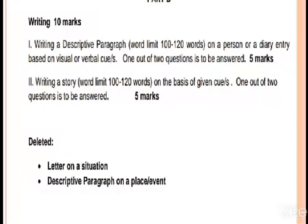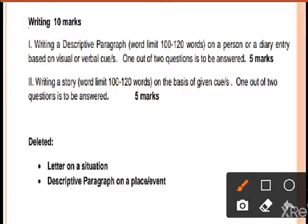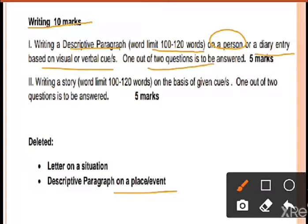Next, we will look at Part B, which is Subjective. In Subjective, there will be the writing section carrying 10 marks. The first question will be a descriptive paragraph in 100 to 120 words describing a person, or a diary entry. There will be visual or verbal hints provided. There will be 2 options. We have to attempt only one, which will be 5 marks.